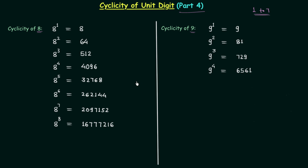We already know that to obtain the cyclicity we simply go on increasing the power to obtain some pattern at the unit place. For example, in cyclicity of 8 we first obtained 8 raised to power 1, which is 8 itself, then 8 raised to power 2, which is 64, and then we go on increasing to 8 raised to power 8 to obtain some pattern at the unit place. In case of cyclicity of 9, we obtained the pattern when we reached 9 raised to power 4.